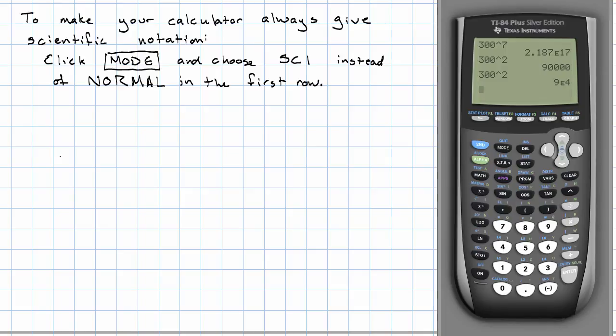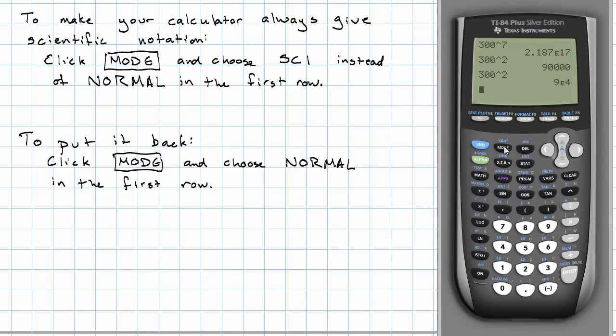Now, once you're done working all in scientific notation, you probably want to go back. How would we go back? Well, we're going to do the same thing except choose normal. So, mode, normal, hit enter, quit, and now 300 to the second power is once again given in decimal notation.